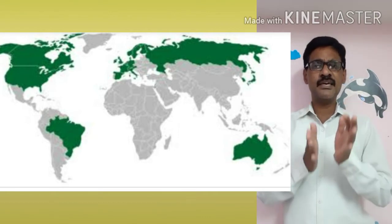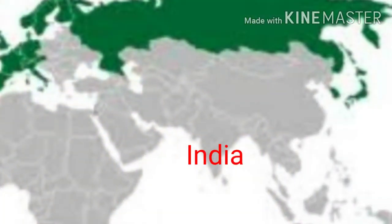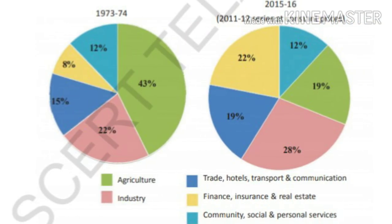But is the same pattern seen in India? Is India following a similar pattern? Look at the pie charts — the contribution of various activities to GDP has been presented for two financial years: 1973–74 and 2015–16.